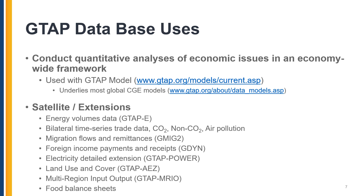Standard with the database release, we have a file that accounts for CO2 emissions and energy volumes data, used with the GTAP-E model. We also have bilateral time series trade data, non-CO2 emissions, and information on air pollution. The GTAP database is extended to account for international migration flows and remittances for use with the GMIG-2 model, and an extension that considers foreign income payments and receipts for use with the G-DINE model. The GTAP Power extension expands data in the single sector of electricity, and we also have a land use and cover extension for use with the GTAP-AEZ model, as well as a multi-region input-output version known as GTAP-MRIO.